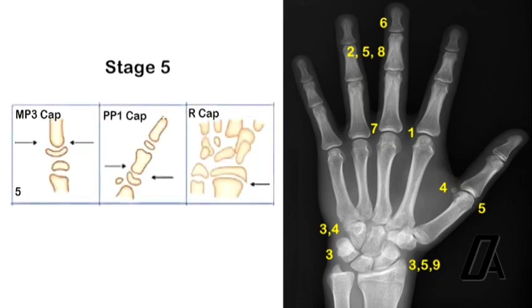During fifth stage, the diaphysis is covered by the cap-shaped epiphysis. The process begins at the middle phalanx of the third finger, followed by proximal phalanx of the thumb and radius. This stage marks the peak of the pubertal growth spurt.